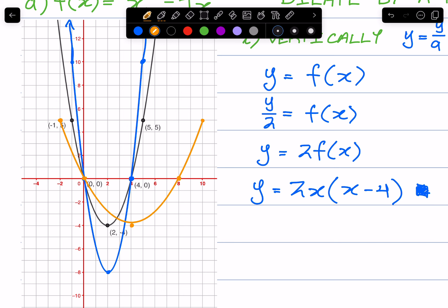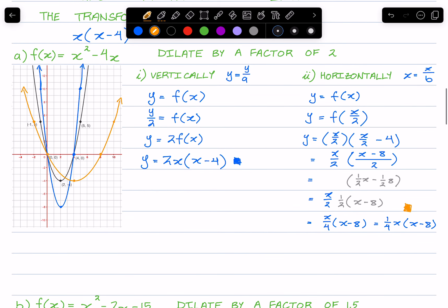When we sketch those, it becomes this transformed parabola like so. And that in orange is the dilated horizontally function of this original one here.